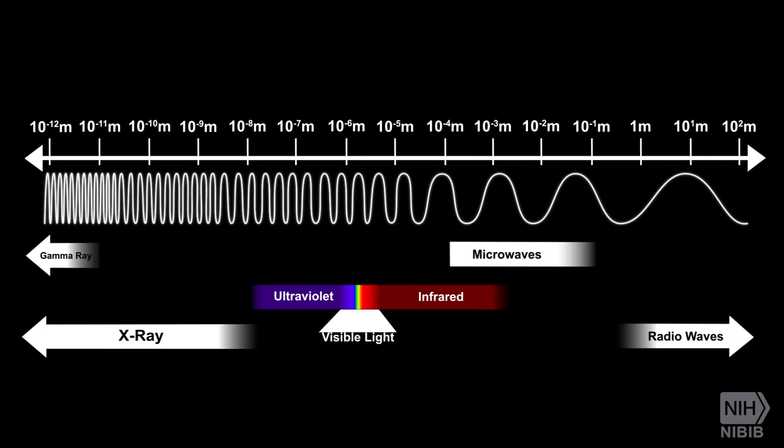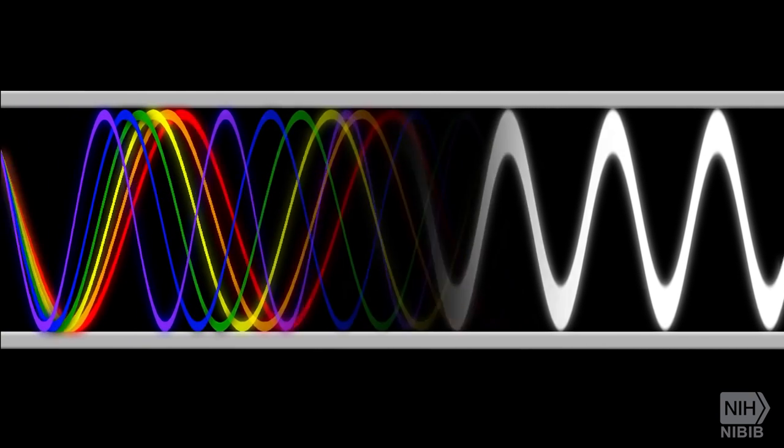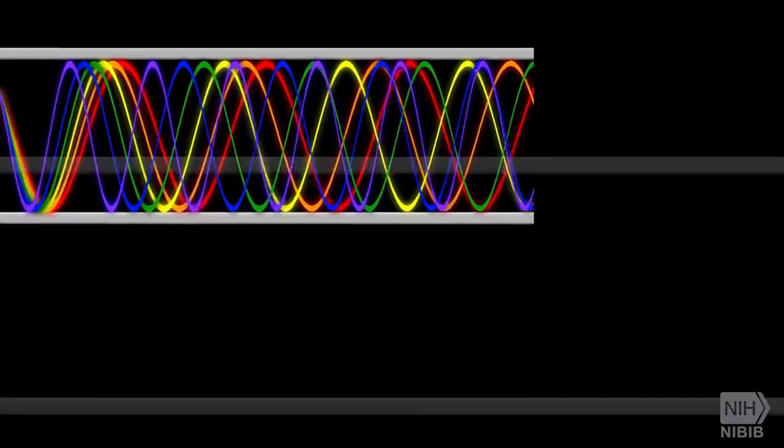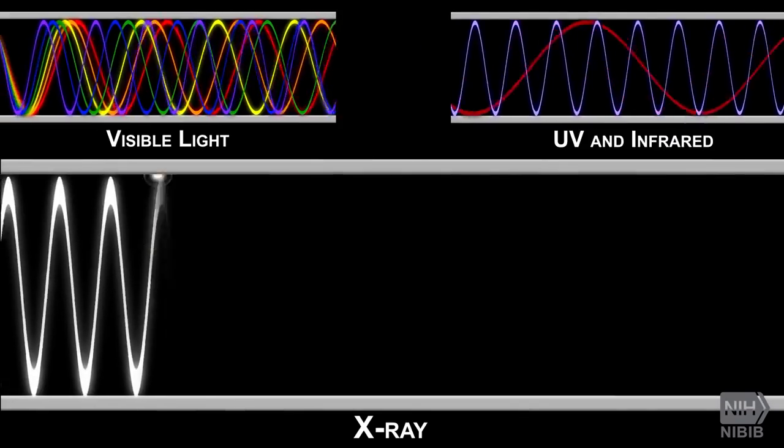Light is a form of electromagnetic radiation. At some wavelengths, it appears as visible light. At others, it takes the form of radiation we cannot see, such as ultraviolet, infrared, and x-rays.